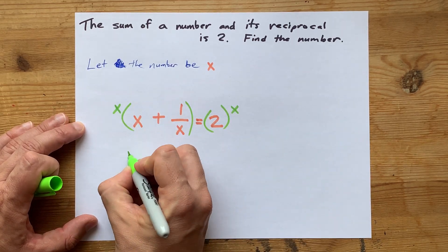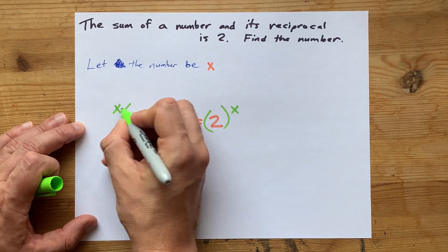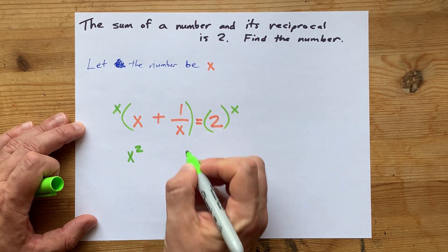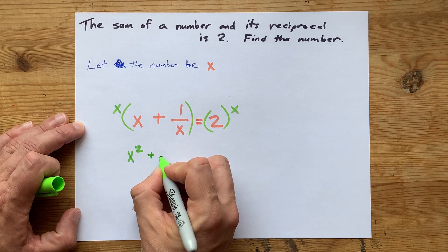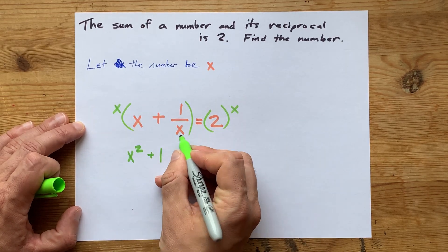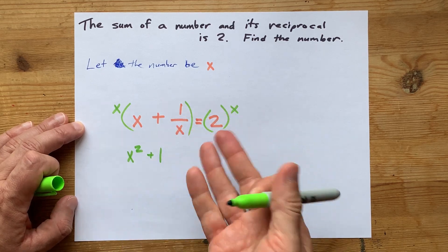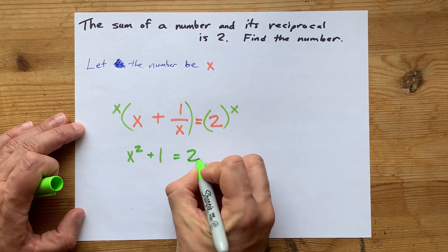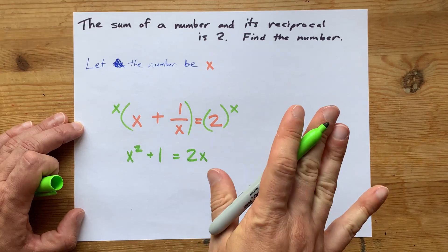x times x is x squared. x times 1 over x is x over itself, which makes it 1. Because dividing by x and multiplying by x undo each other, so we're left with what's on top of the fraction. And that equals 2x itself.